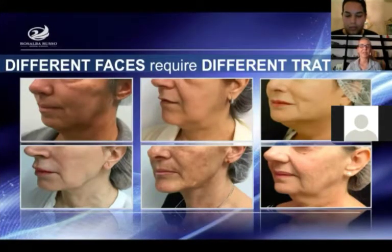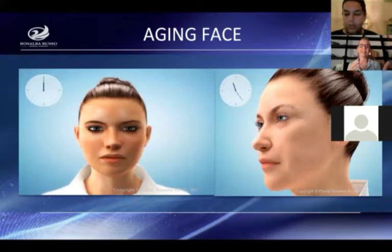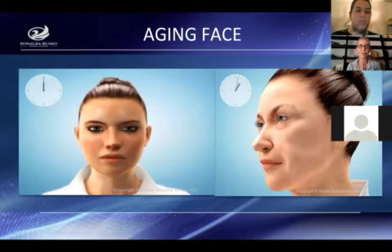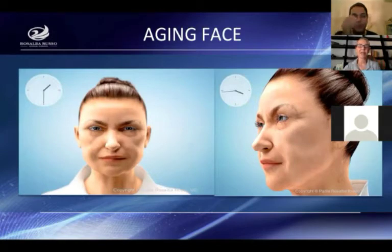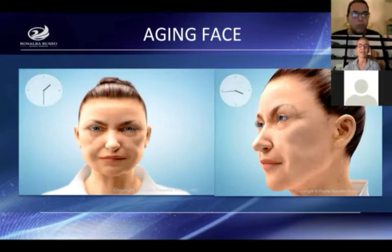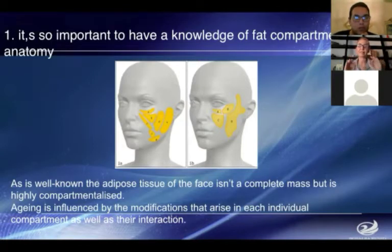You can see women aging from 20 to 70 in just a few seconds, but this is exactly what happens over the course of a lifetime. In order to contrast the aging process, we can employ a series of combined treatments which require a good knowledge of anatomy. To approach this combined treatment, you need to have a good knowledge of anatomy and remember that the subcutaneous fat is compartmentalized, as Rorich and Pessa have widely stated.